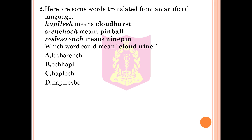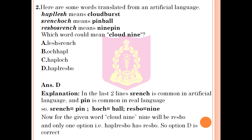Question 2: Here are some words translated from an artificial language. The correct answer is Option D. Explanation: Sirench is common in the last two lines of artificial language, and pin is common in real language, so sirench equals pin, hosh equals ball, and resbo equals nine. For the given word 'cloud nine', nine is resbo. Only one option — haple resbo — contains resbo. Therefore, Option D is correct.